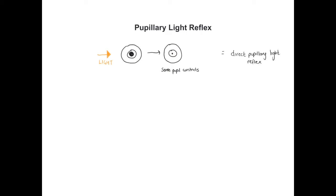But what we also see is that even if we direct the light into the right eye, the opposite eye — the one we didn't actually shine light into — also constricts. This is known as the consensual light reflex.